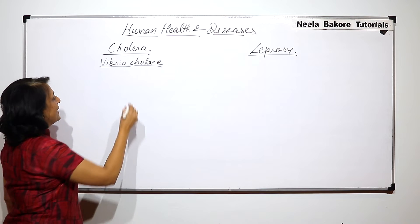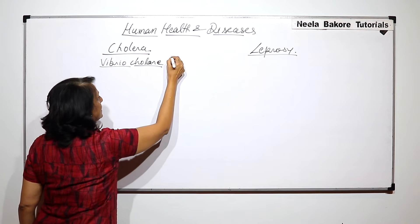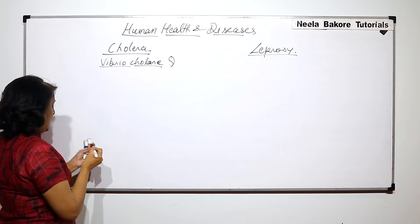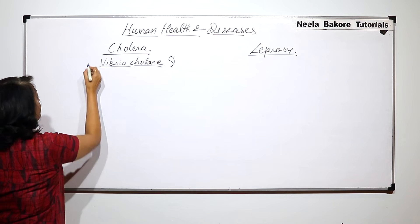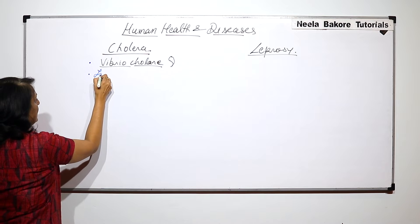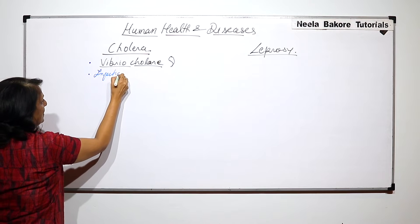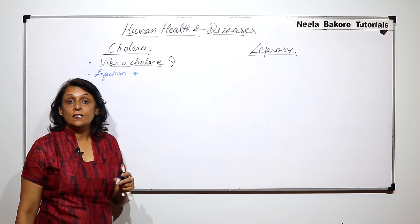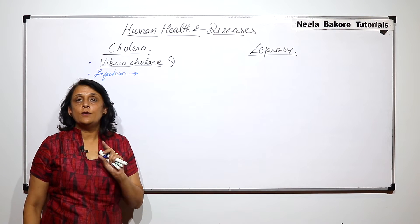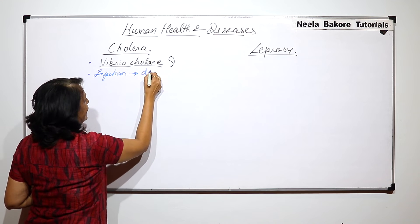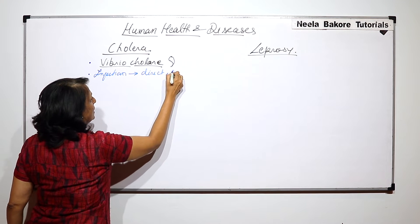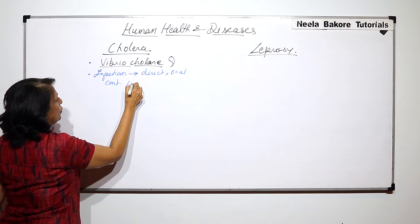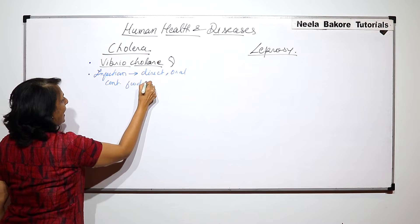Vibrio cholerae is a comma-shaped bacterium. The infection spreads through contaminated food and water, so it is called direct oral transmission, as it spreads through contaminated food and water.